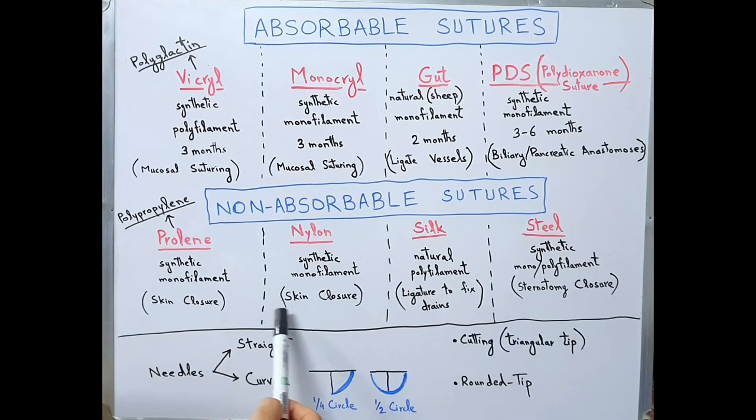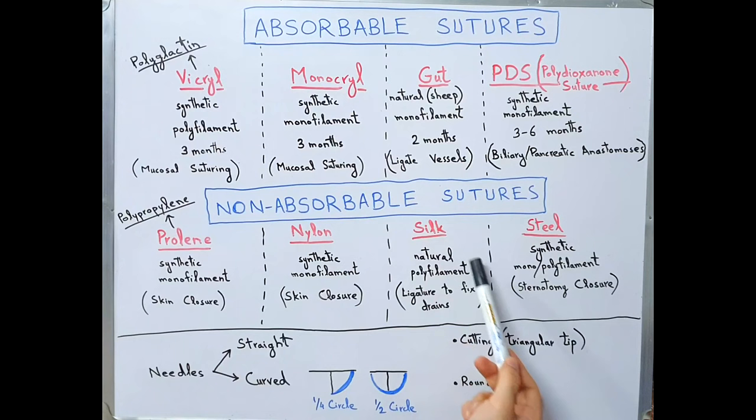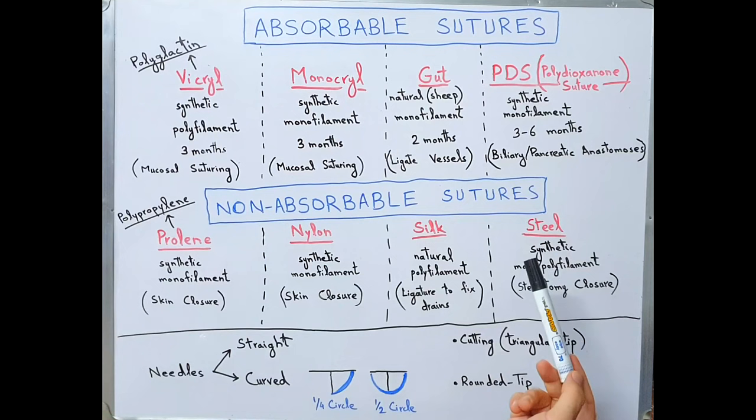Very similar to polypropylene is nylon. It is also synthetic monofilament and used for skin closure. Then we have silk and steel. Silk is natural polyfilament, used for ligature to fix drains. Then we have steel, which is synthetic and can be monofilament or polyfilament.